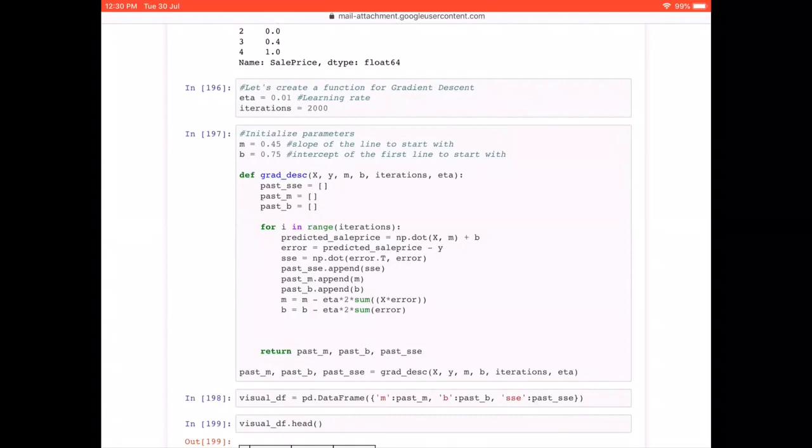And once this 2000 times it has run, what we can do is we can return the list of m, b and the ssc that you can see here. We said return past_m, past_b and past_ssc.